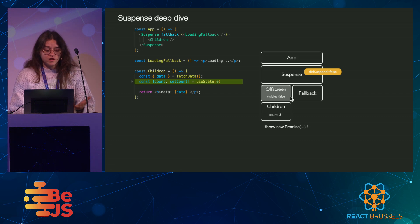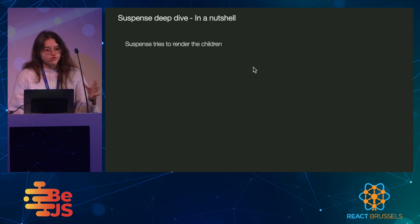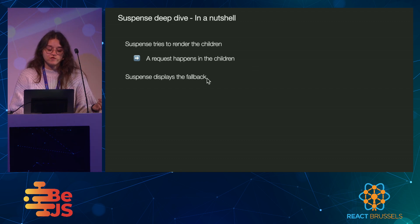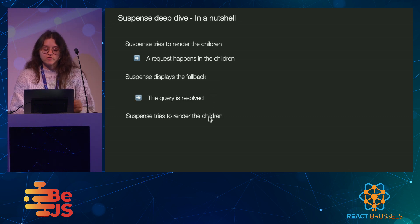So this is how suspense works. In a nutshell: suspense first tries to render the children. Then maybe a request happens in the children, so suspense displays a fallback. And when the query is resolved, suspense tries to render the children again.